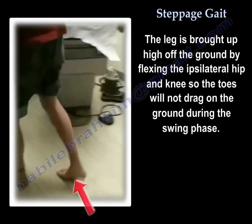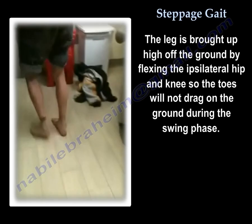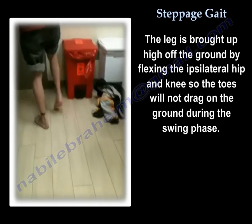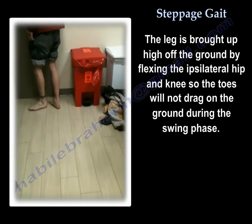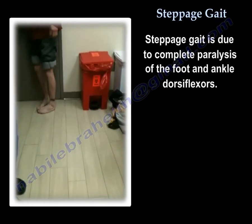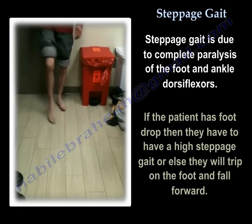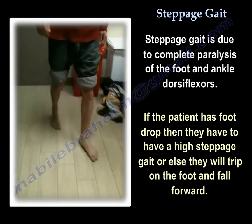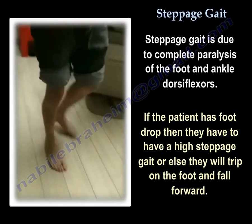The leg is brought up high enough off the ground, flexing the ipsilateral hip and knee so that the toes will not drag on the ground during the swing phase. Steppage gait is due to complete paralysis of the foot and ankle dorsiflexors. If the patient has foot drop, then they have to have a high steppage gait or else they will trip on the foot and fall forward.